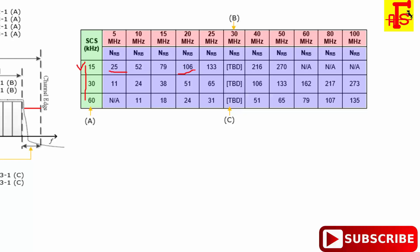For 5 MHz bandwidth, the number of resource blocks is 25. For 20 MHz bandwidth, the total number of resource blocks is 106. For 60 kHz subcarrier spacing with 60 MHz bandwidth, the number of resource blocks used is 79. This is shown in a chart as per 3GPP.